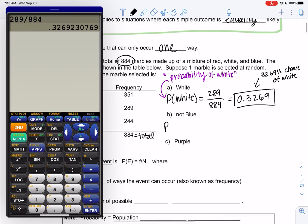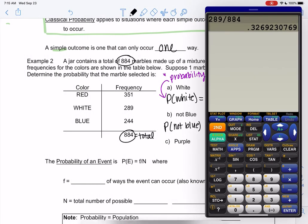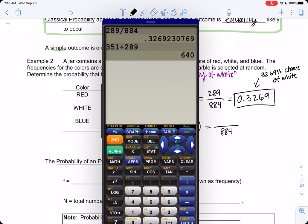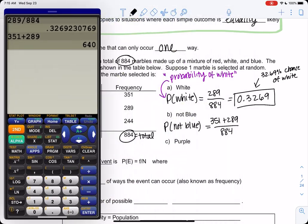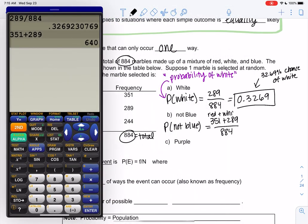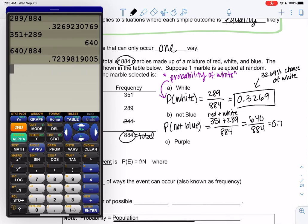Let's try another one. Probability of not blue. The total is still 884. Not blue, cross off blue, just means white or red. So we'll add the white and red together. 351 plus 289, 640. Sorry, that was red is 351, right? We're just adding the colors that aren't blue. There's 640 that are not blue, because we took away the 244. We'll do 640 over 884 and we get 0.7240. So 72% chance that it's not blue.